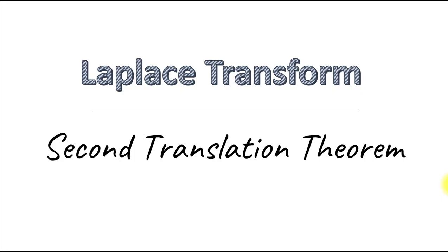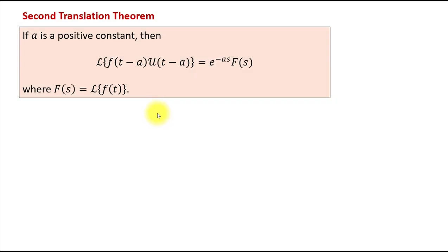In this video we're going to learn about the Second Translation Theorem. The Second Translation Theorem gives us a shortcut for evaluating the Laplace transform of the product of a translated function and the unit step function. Notice that the amount of translation matches the value at which the unit step function changes from 0 to 1. The Laplace transform of such a function equals e to the power negative as times the Laplace transform of f(t), the original non-shifted function.